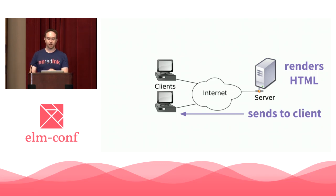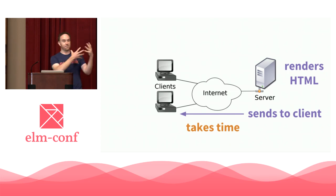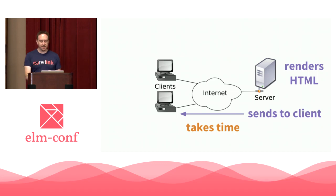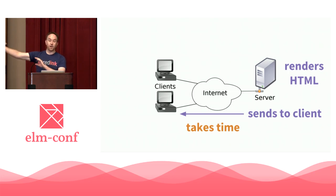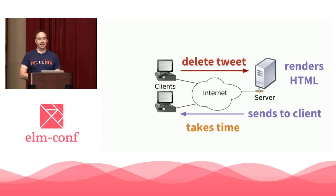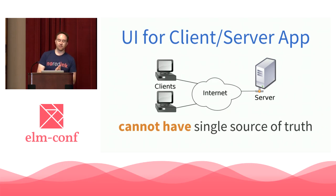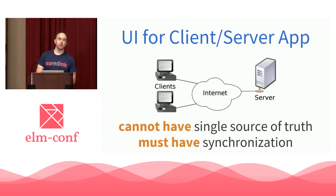It's perceptible latency, which means over the course of the network transmission — while the up-to-date UI is headed toward my browser — my friend could delete the tweet, and now I'm out of sync again. So even trying as hard as possible to have a single source of truth, it's just not possible with a client and a server. You must have synchronization; it's unavoidable.